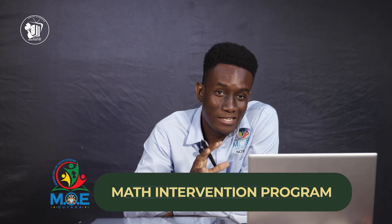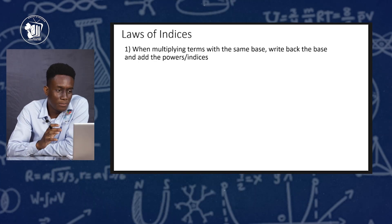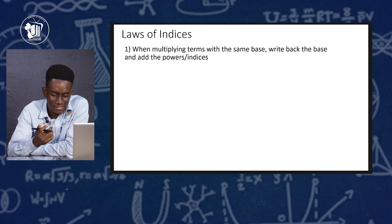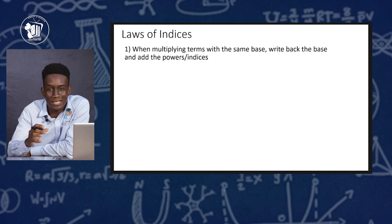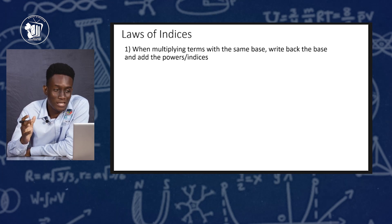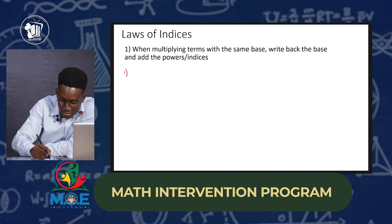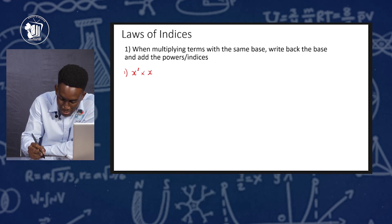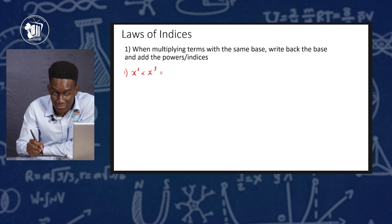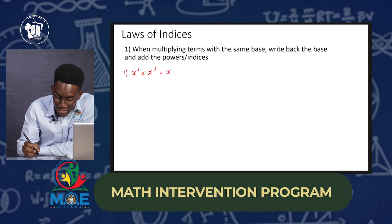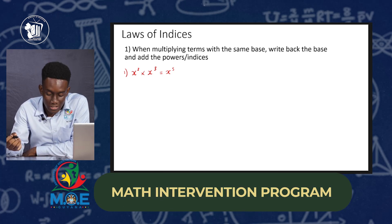Now that we have a solid understanding of identifying the base and the index, let's head into our first law. The first law says: when multiplying terms with the same base, write back the base and add the indices. This will be used a lot in your preparation for the exam. So let's look at the first example: x to the second power multiplied by x to the third power. The bases are the same, so we write back the base and add the indices — 2 plus 3 gives you 5. So x² × x³ simply gives you x⁵.